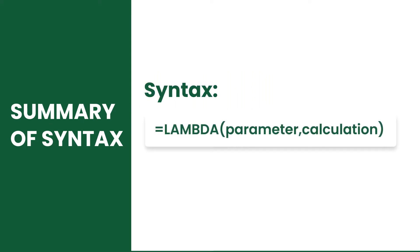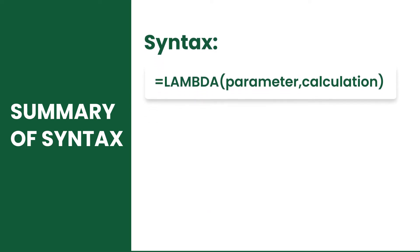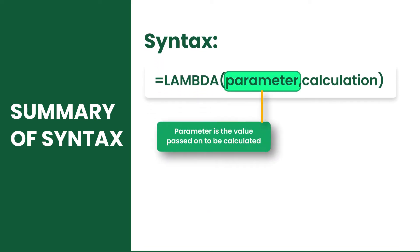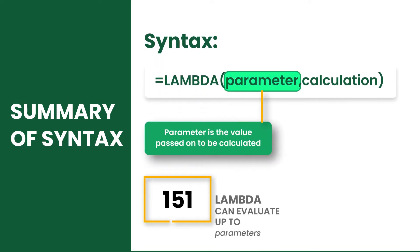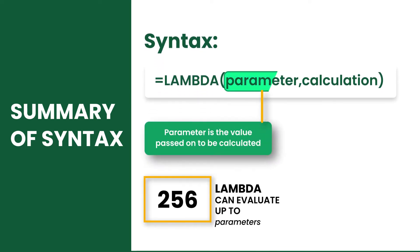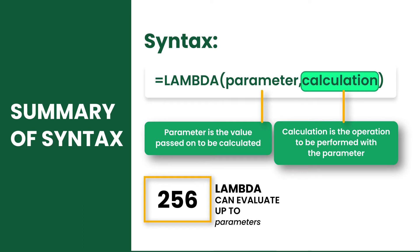The LAMBDA function has two arguments: parameter and calculation. Parameter is the value passed on to be calculated, while calculation is the operation to be performed with the parameter.